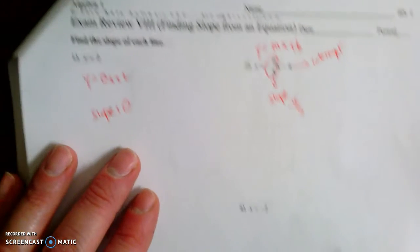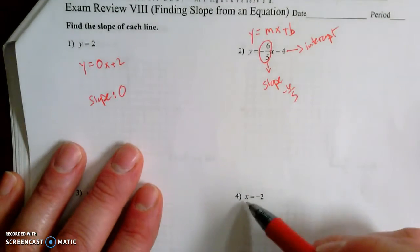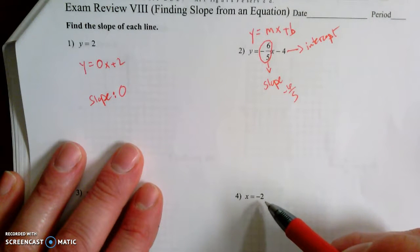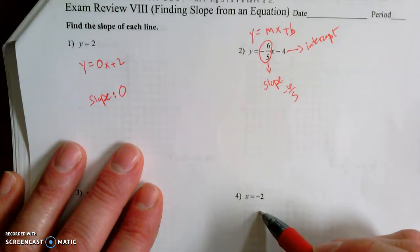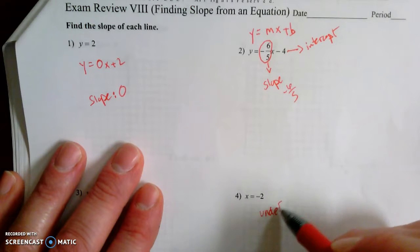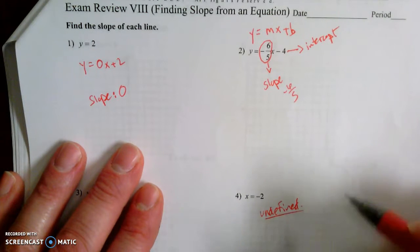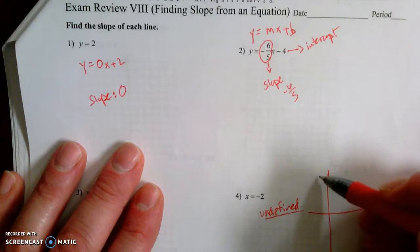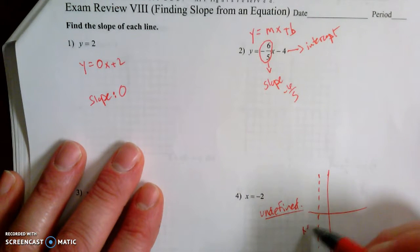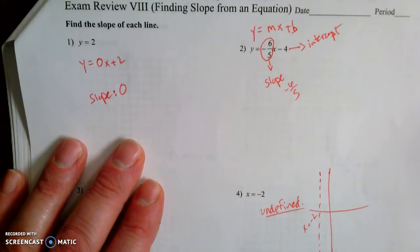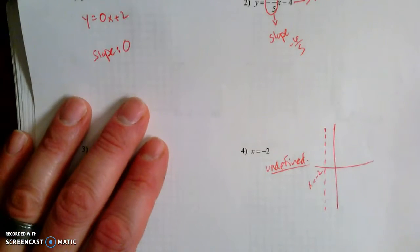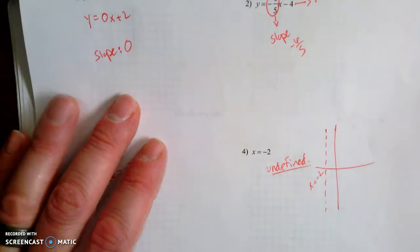The other thing you have to watch out for is down here. If you just have x equals something and there's no y, this is undefined. Because a line like this is a vertical line that passes through the x-axis at x equals negative 2. Vertical lines have undefined slope, no slope at all.